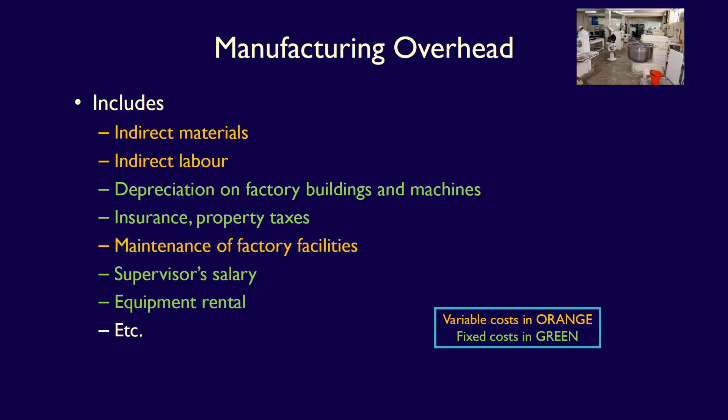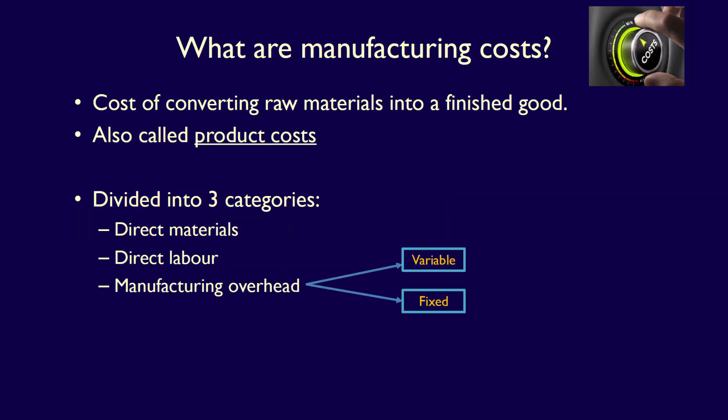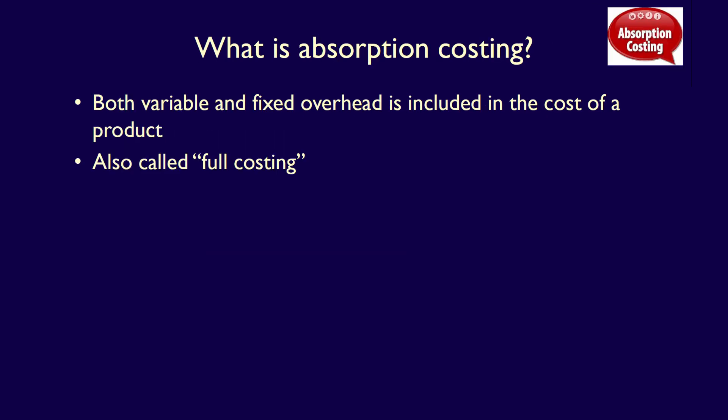It's clear that manufacturing overhead is made up of both variable and fixed costs. When we're costing products, we therefore include direct materials, direct labor, and both variable and fixed manufacturing overhead. This separation of manufacturing overhead into variable and fixed is very critical for absorption costing. This costing method, where both variable and fixed manufacturing overhead are included in the cost of the product, is called absorption costing, or full costing.